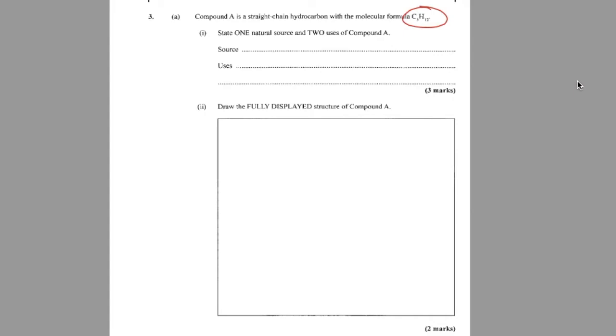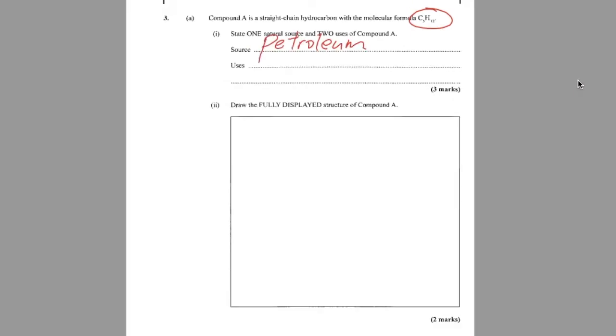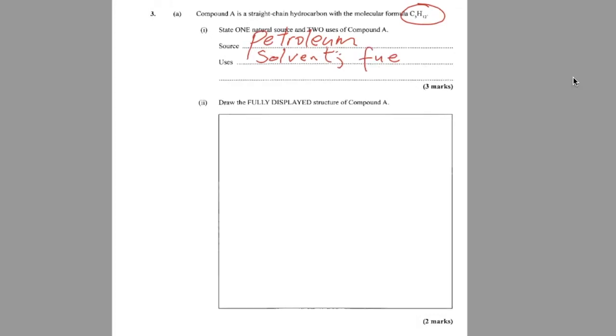State one natural source and two uses of compound A. So the natural source is petroleum, or you could say crude oil. Crude oil and petroleum are the same thing. The other source is natural gas but the question asks for one. Two uses: pentane can be used as an organic solvent. It can also be used as a fuel. It could also be used as a refrigerant but only two.